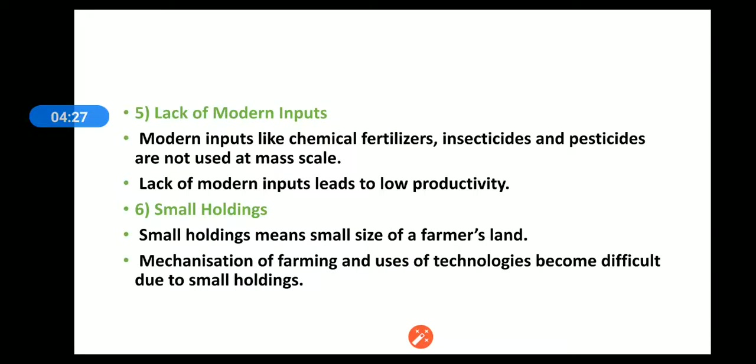Fifth feature is lack of modern inputs. The modern inputs like chemical fertilizers, insecticides, and pesticides are not used at mass scale, and this lack of modern inputs leads to low productivity.